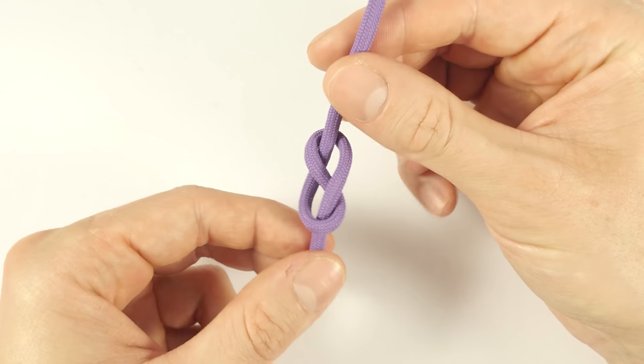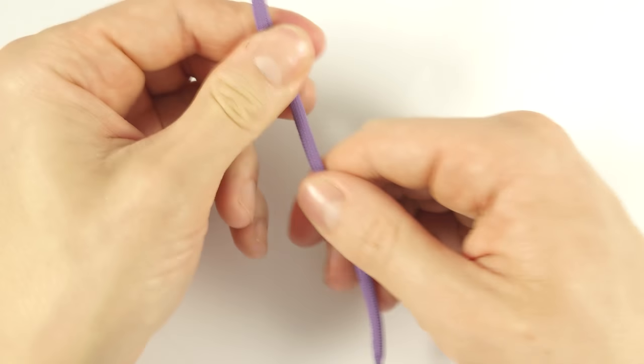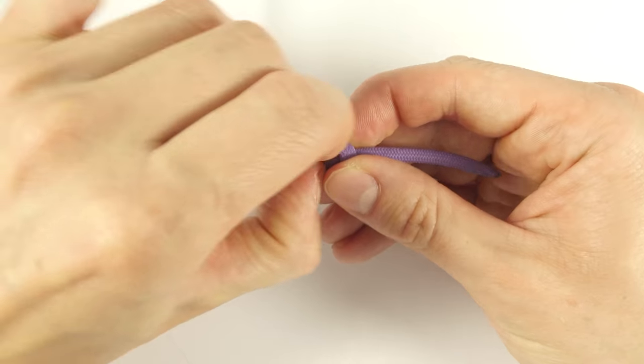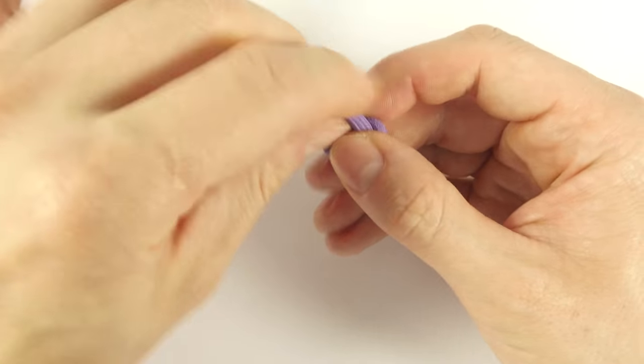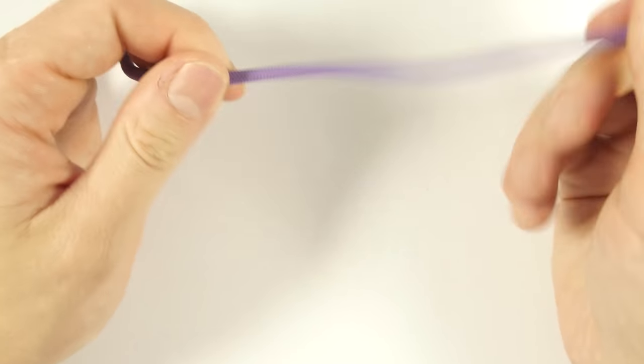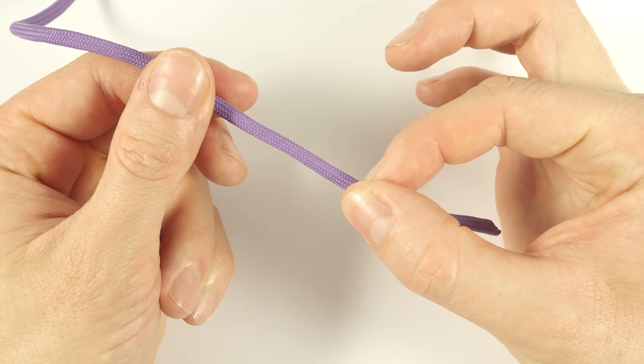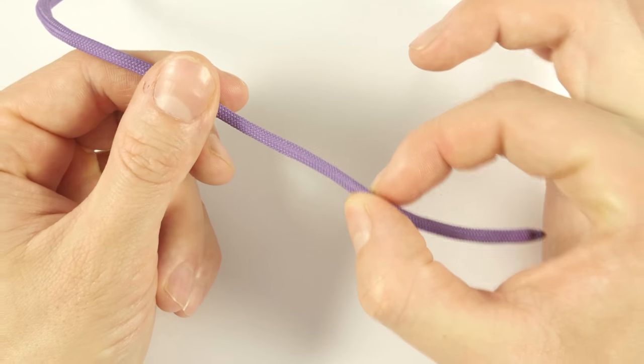It is a non-jamming stopper knot, so you can fairly easily untie it after you have used it. It prevents your rope from running away from you. So this is the first use and the most common one.